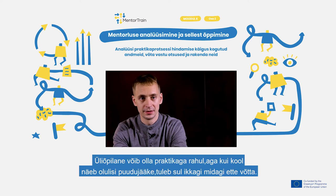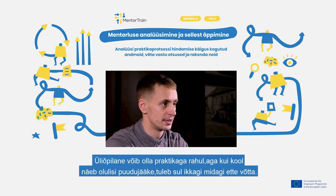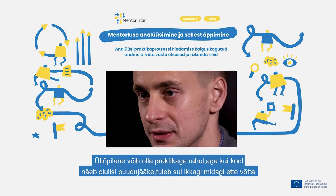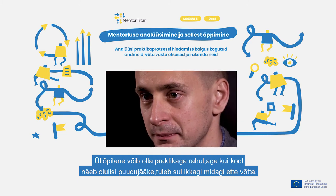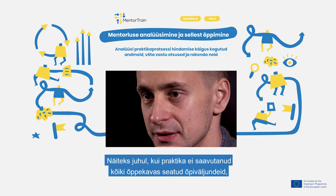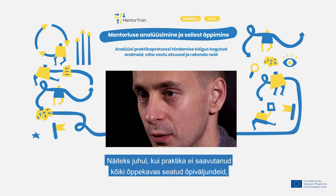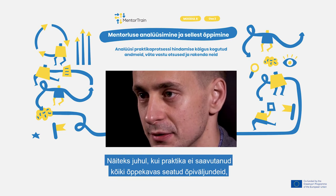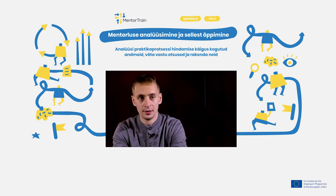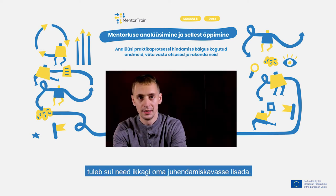A student might be satisfied with the apprenticeship, but if the school sees significant shortcomings, you still need to take action. For example, if the apprenticeship did not fulfill all the learning outcomes stated in the syllabus, you still need to include them in your mentoring plan.